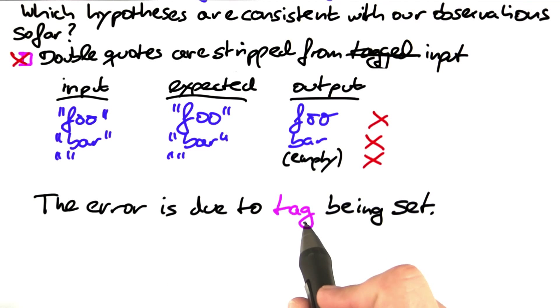The error is due to the variable tag being set. How do we know whether this variable is being set?